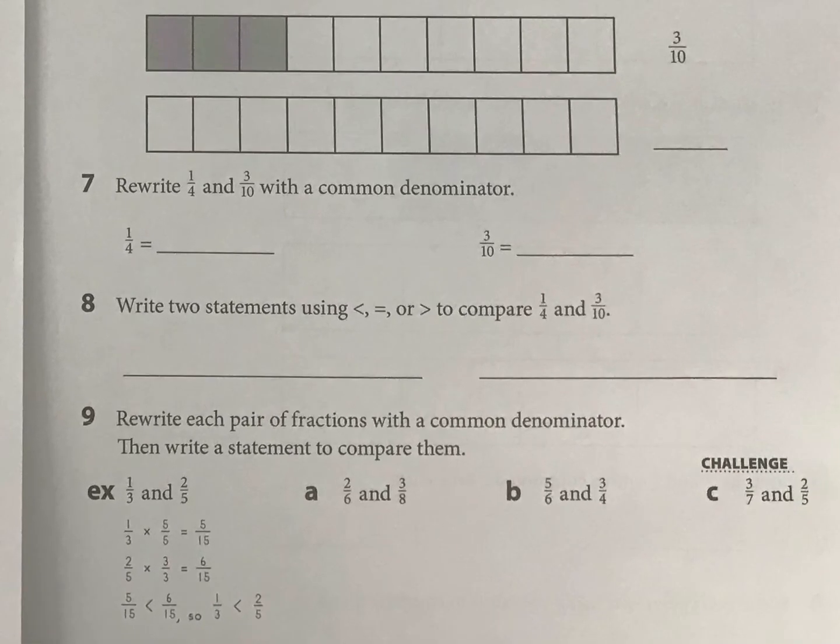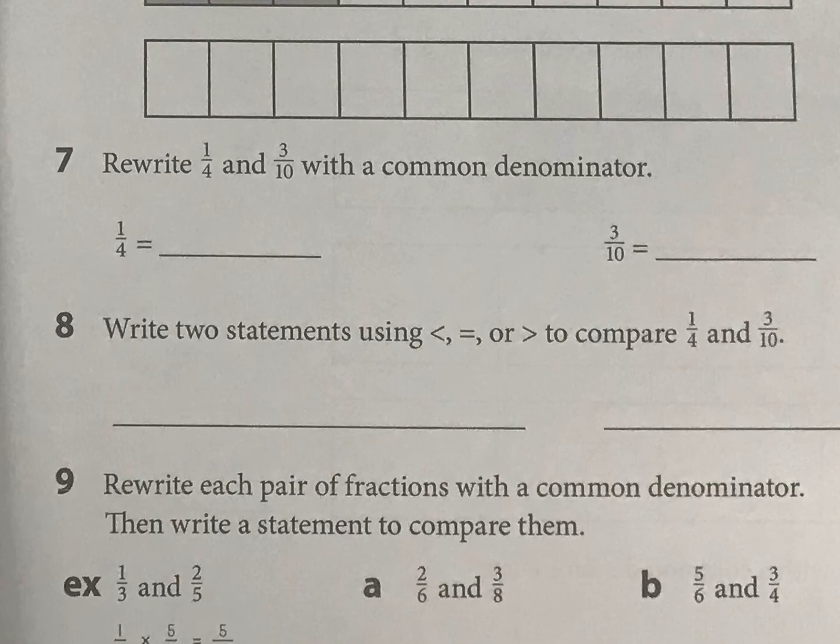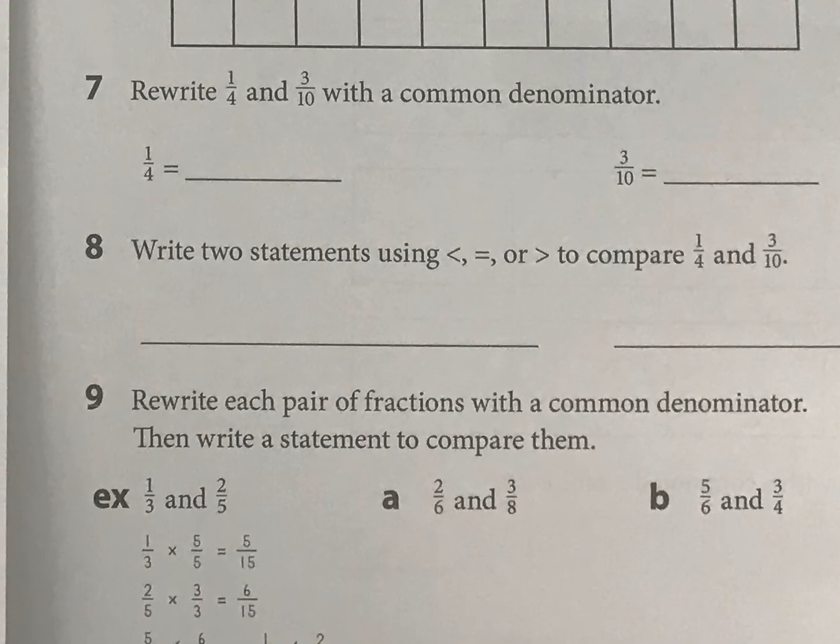And now we need a common denominator of one-fourth and three-tenths. So the more you practice this, the easier it's going to get. But I know that twenty is a common denominator. And four times what is going to give me twenty is going to be five. So this is going to be five-twentieths. And then what times ten is going to give you twentieths. And that's going to tell you what goes there.